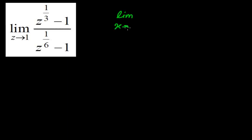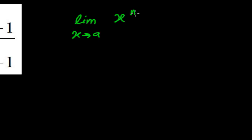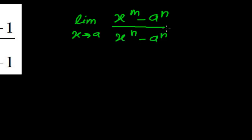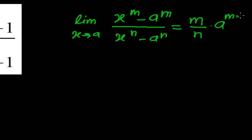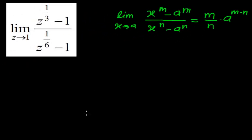The formula is: limit when x tends to a, of x to the power m minus a to the power m, whole divided by x to the power n minus a to the power n, is equal to m upon n times a to the power m minus n. This is the formula we use to solve these kinds of problems.